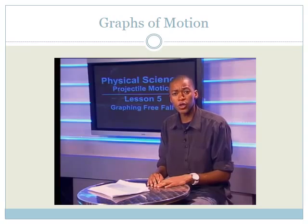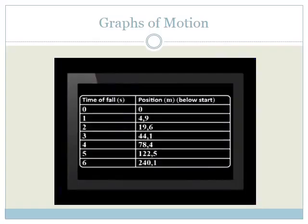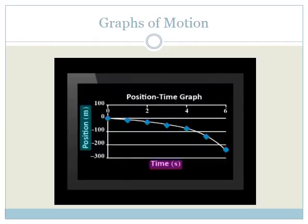And now, let's look at how our ball's position changes during free fall. This is the data for the ball's position below the starting point at the end of each second of fall. Since positions below the start are taken as negative, we can write the data like this. Here is a position time graph for this motion. Notice how this graph becomes steeper and steeper.